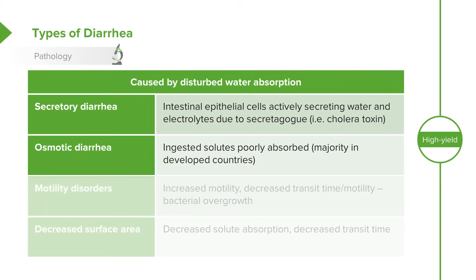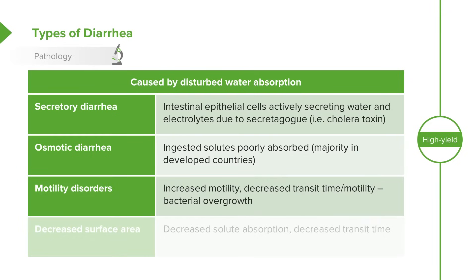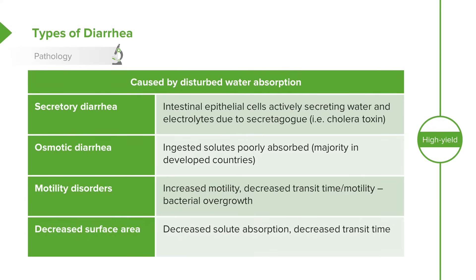Unfortunately, we see this a lot — sometimes even children who are failing to thrive because of excessive juice consumption. Children who eat large amounts of osmotic material will start to stool out. Motility disorders can occasionally occur, which can decrease transit time, generally through bacterial overgrowth, though this is not too common. Lastly, patients may have decreased surface area and thus an inability to actually absorb material, creating what is effectively an osmotic diarrhea.